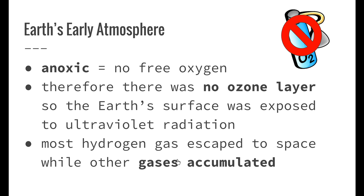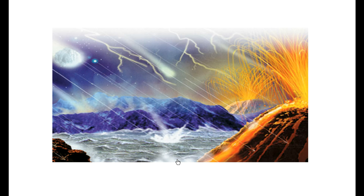Most of the hydrogen gas from the volcanoes escaped into space, which still happens now, while other gases accumulated. As we know from junior science, for chemical reactions to take place, we sometimes need the input of energy in some form. We can see a couple of different forms of energy in this image, and we'll go through them one at a time.